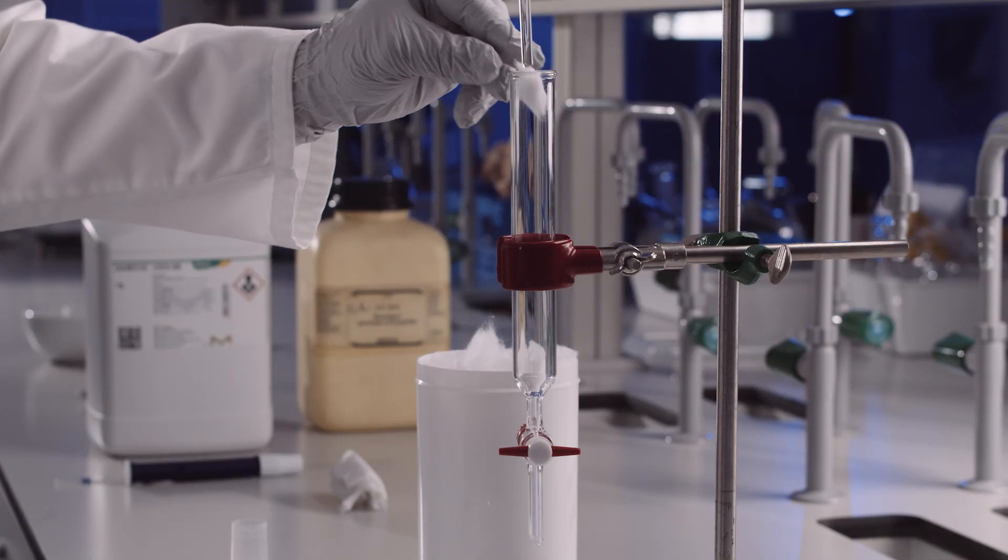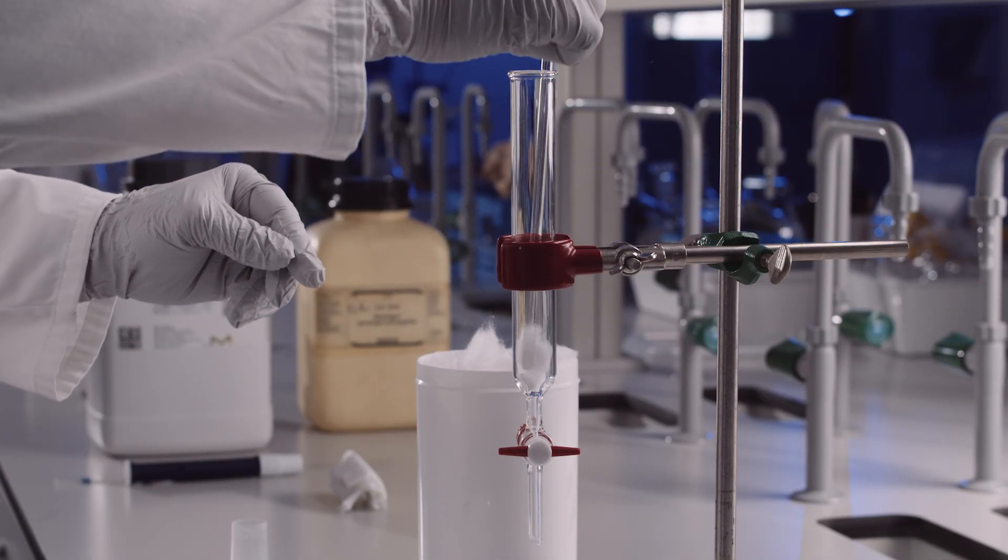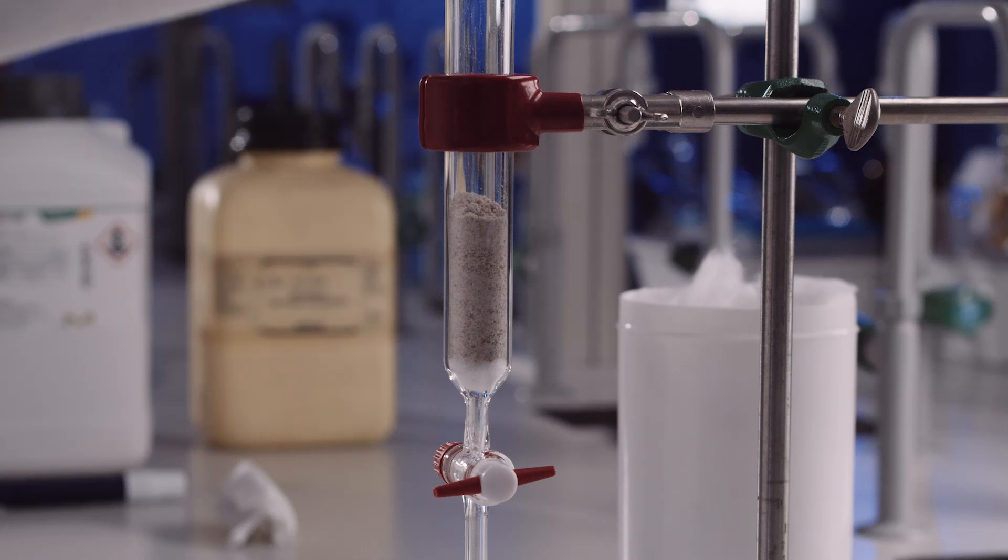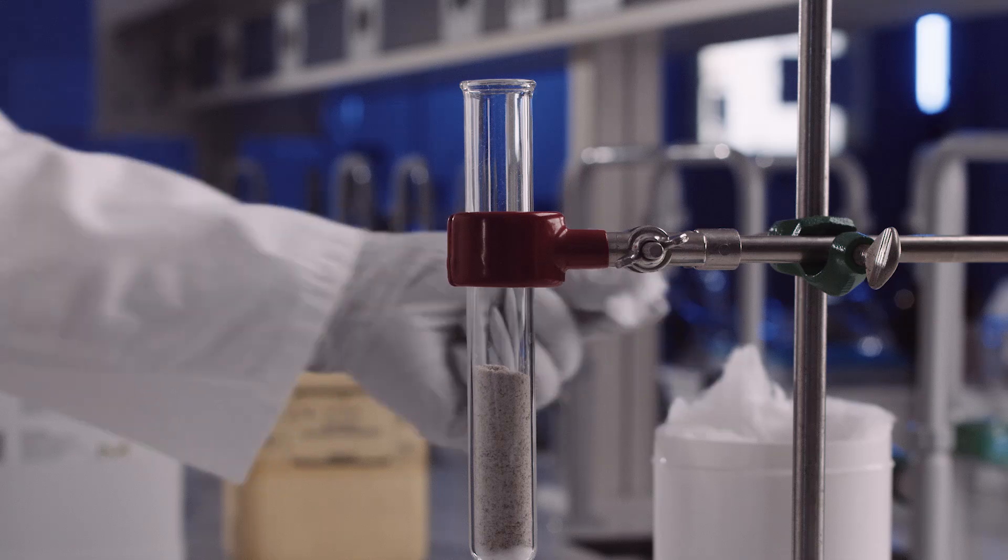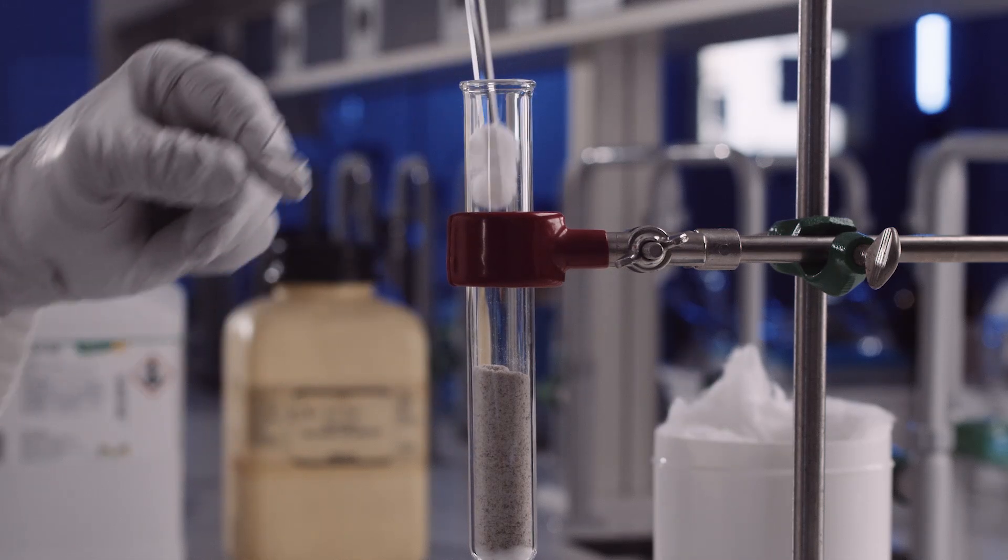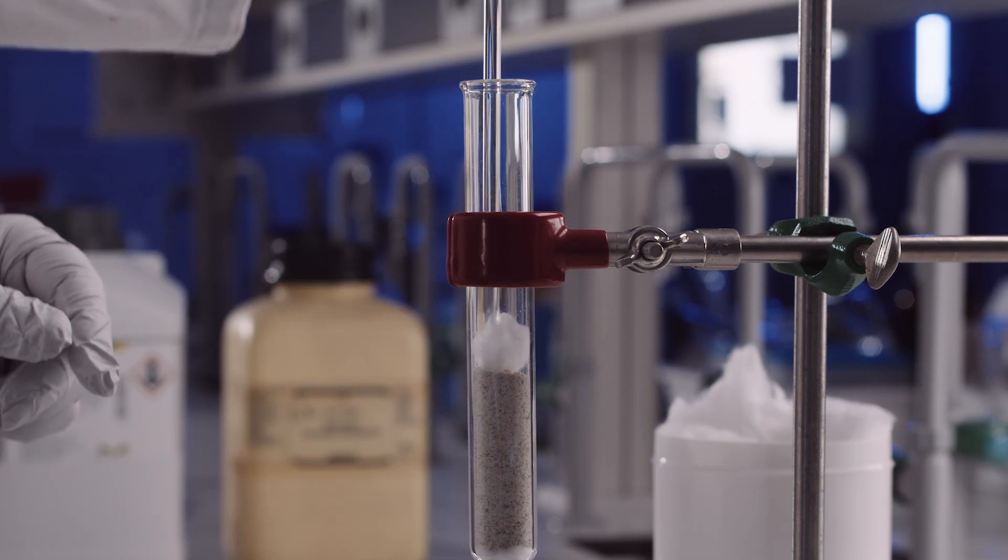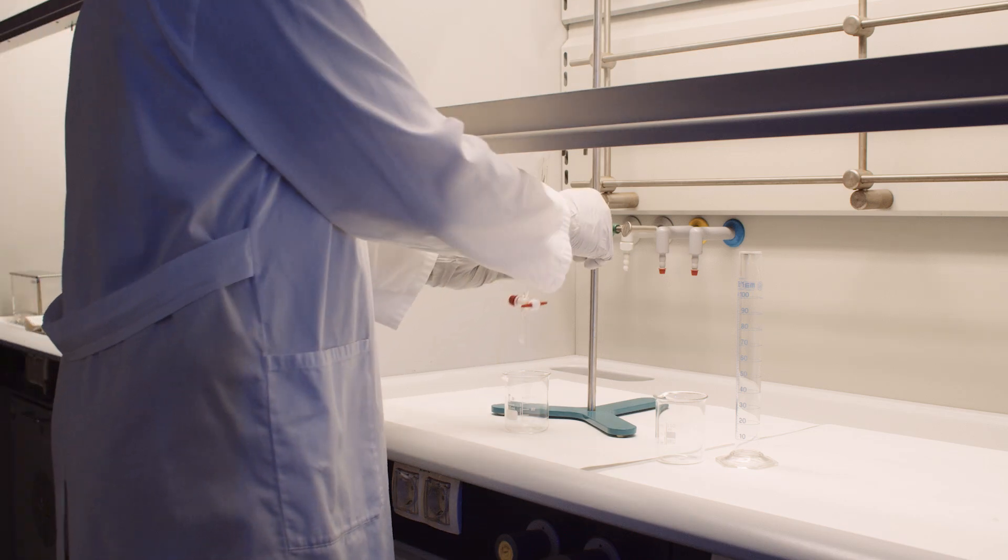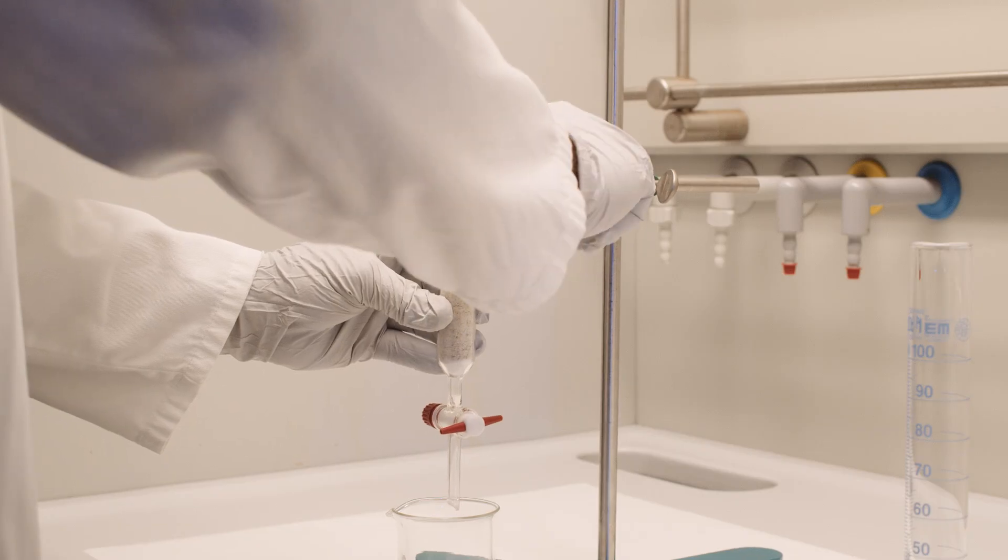Put a piece of cotton wool on the bottom of the glass column to prevent the stationary phase particles from leaking out of the column. Then add to the column the previously prepared mixture of ground poppy heads, sodium carbonate, and silica gel. Another piece of cotton wool is added to the top of the column to prevent the stationary phase from rising when rinsed with the mobile phase. Transfer the prepared column to a fume hood and clamp it in a stand.